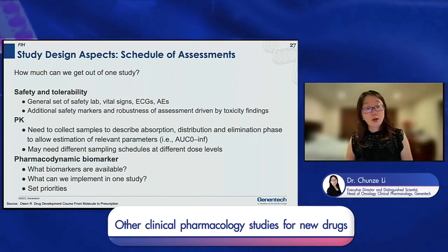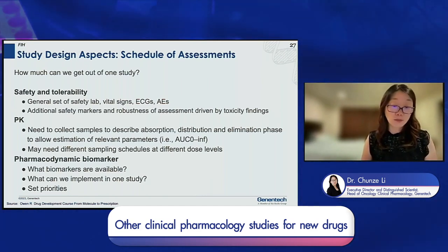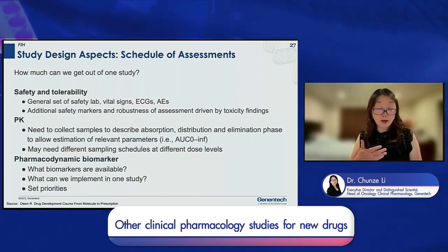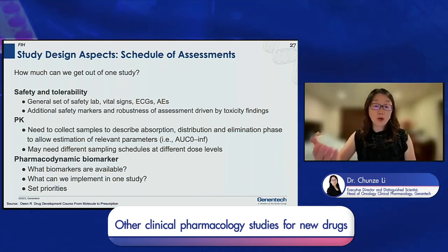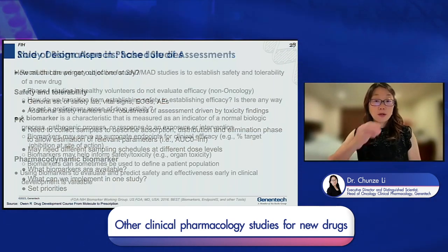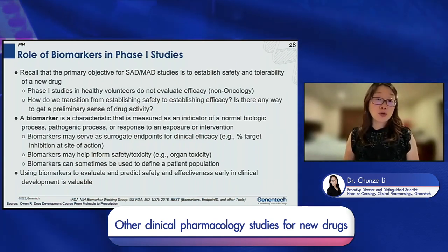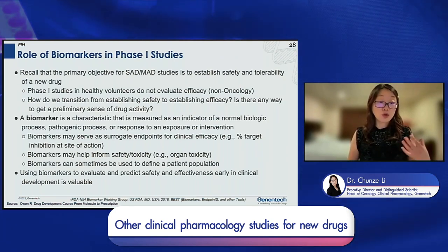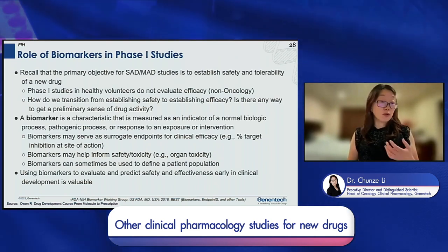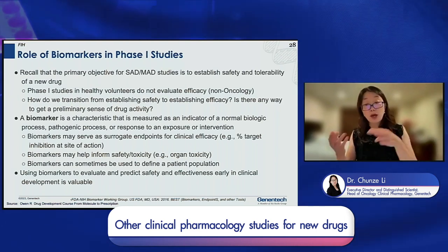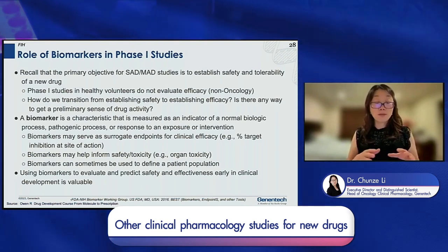In the context of PD biomarkers, the key questions are: what biomarkers are available, how relevant are they for efficacy and safety, and how feasible is it to implement them in the study? We can collect a lot of biomarkers, but it's expensive, so we need to prioritize based on the key questions we want to address. In phase one, since studies are usually in healthy volunteers and we cannot evaluate efficacy, biomarkers can provide potential information to bridge that gap from safety to efficacy.